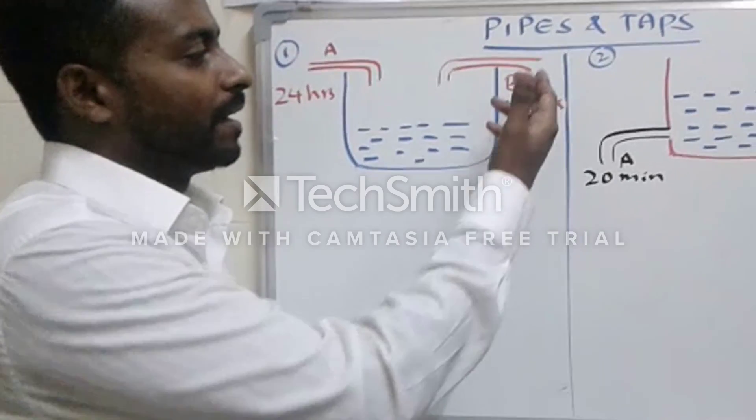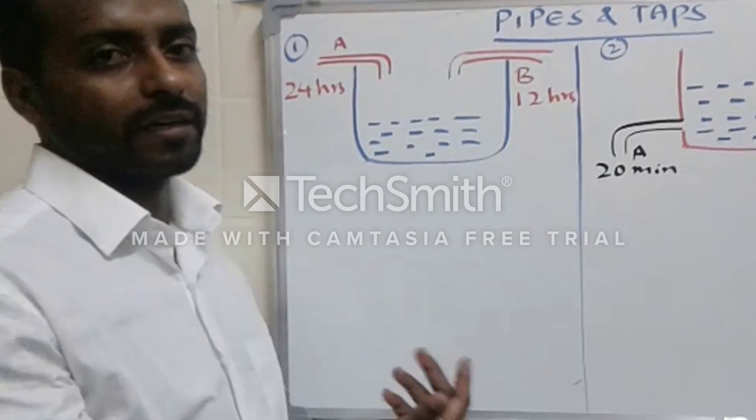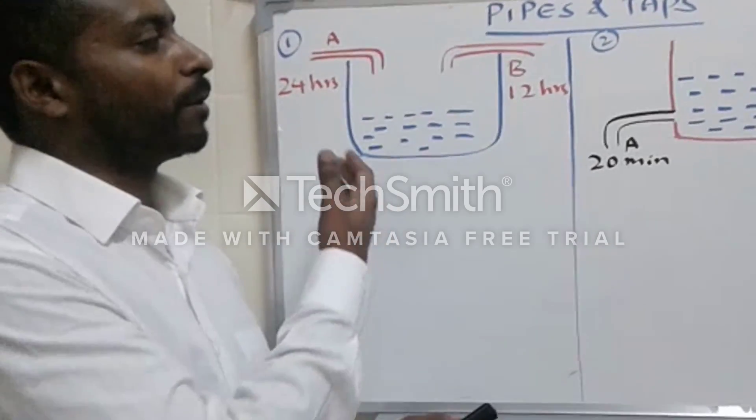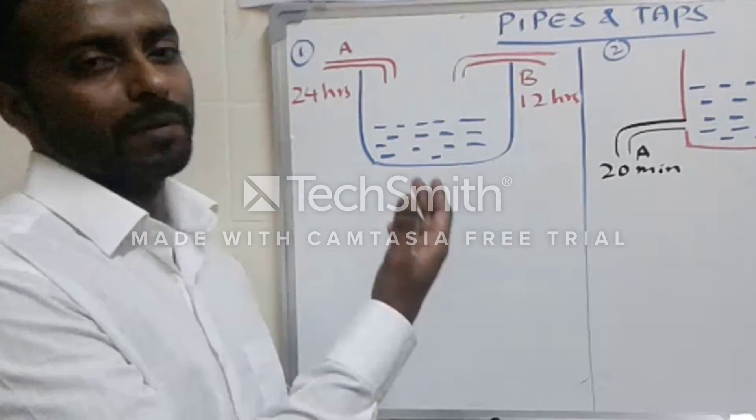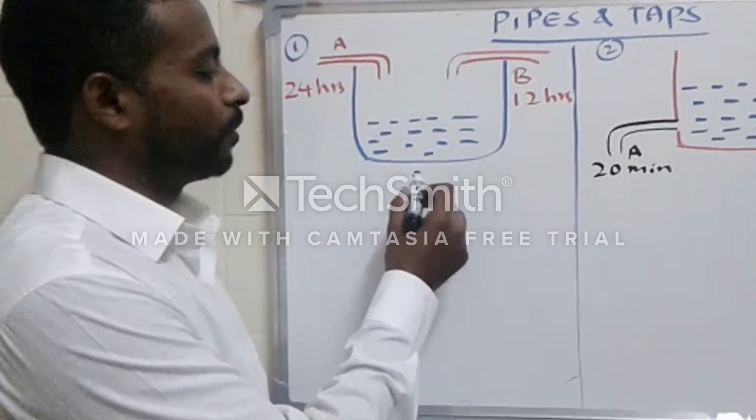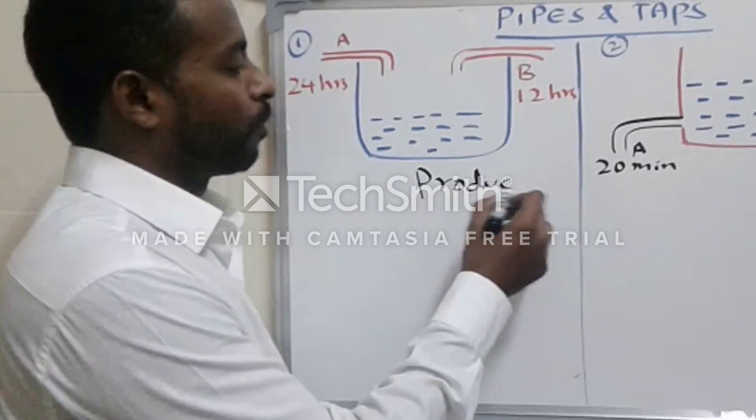Whereas tap B takes 12 hours to fill the tank, how much time will they take if we open both the pipes together simultaneously? For that, the simple tip is just to remember this formula: product over sum.